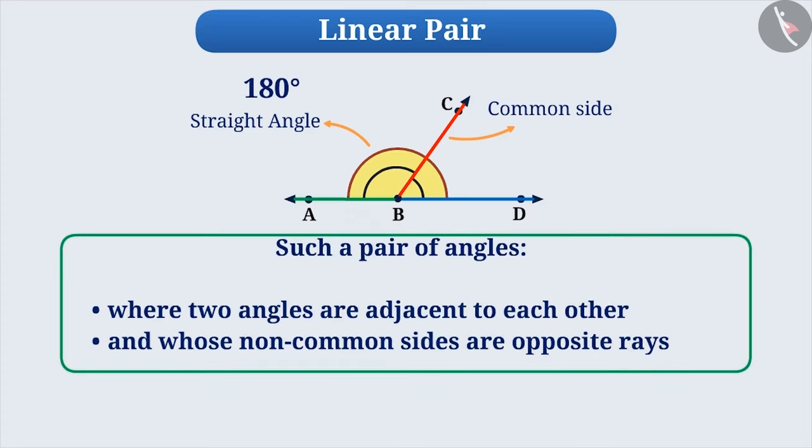Such a pair of angles, where two angles are adjacent to each other and whose non-common sides are opposite rays, is called a linear pair.